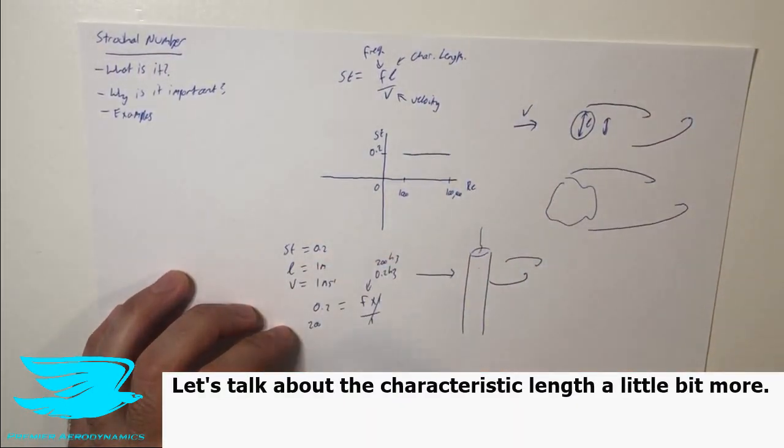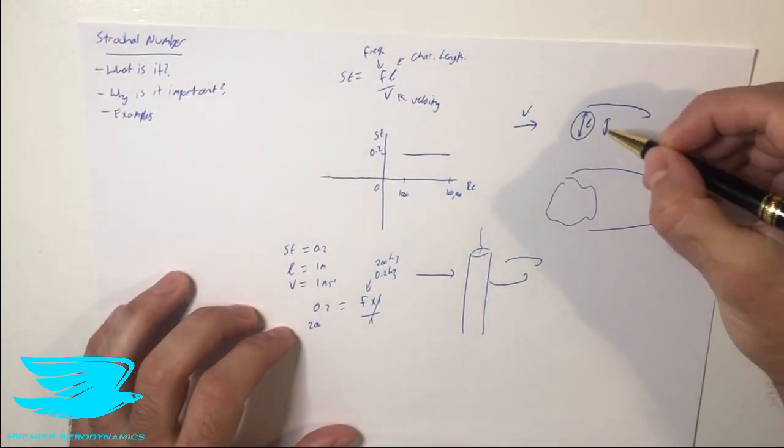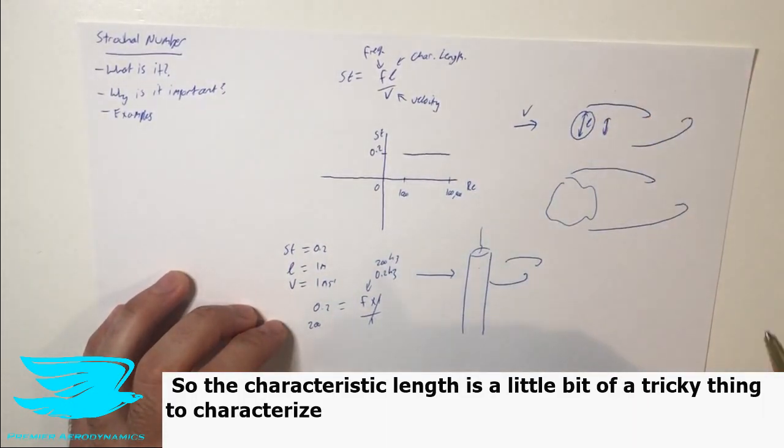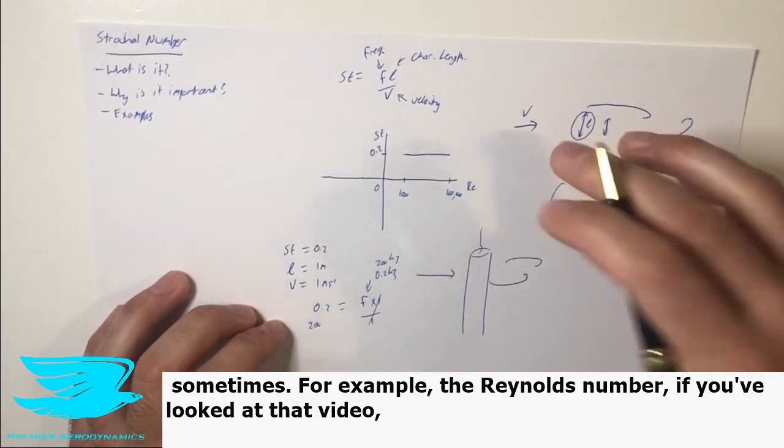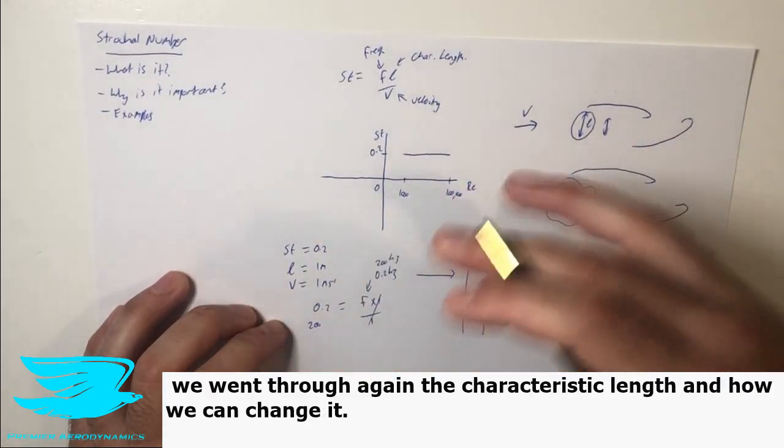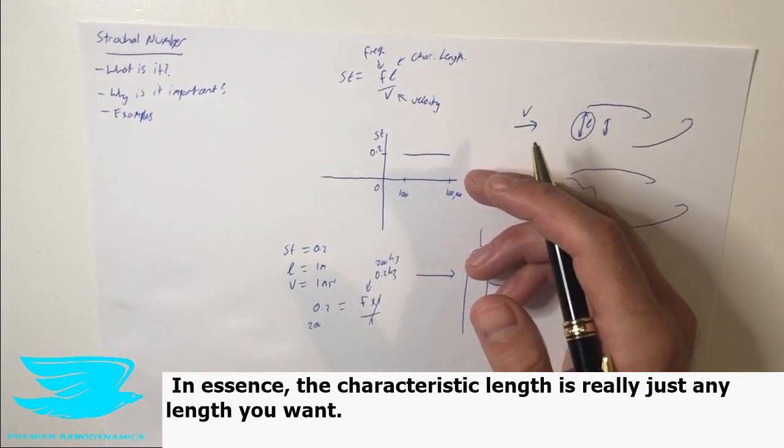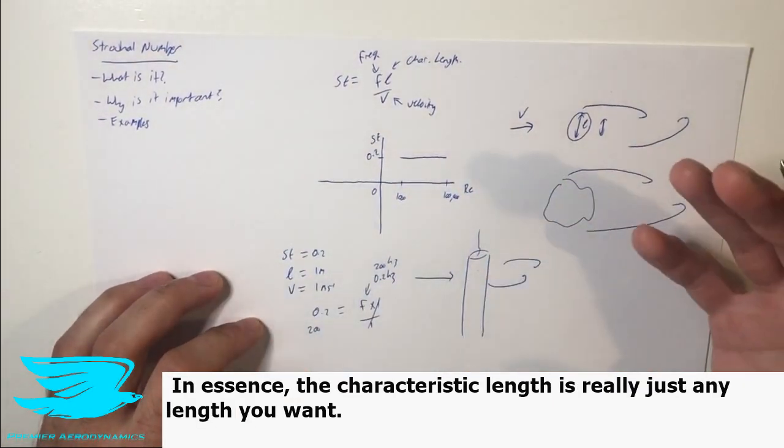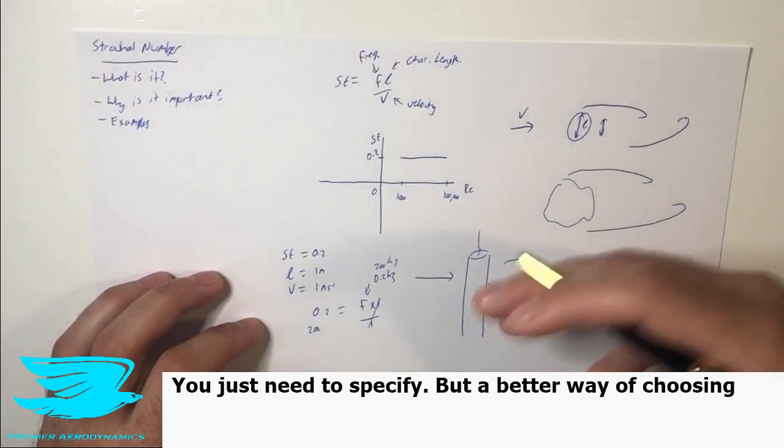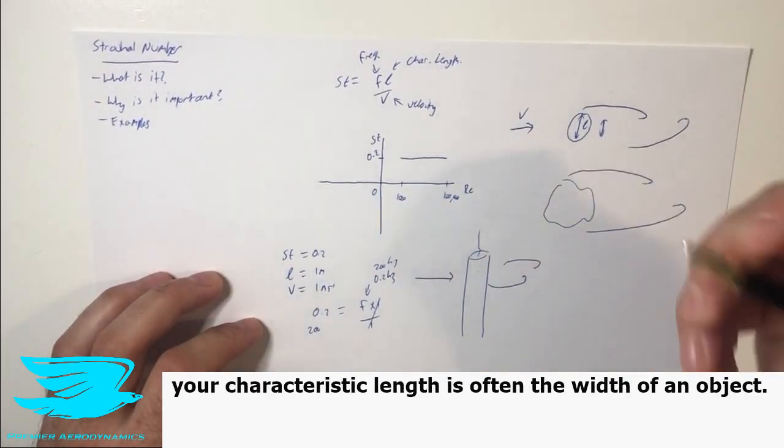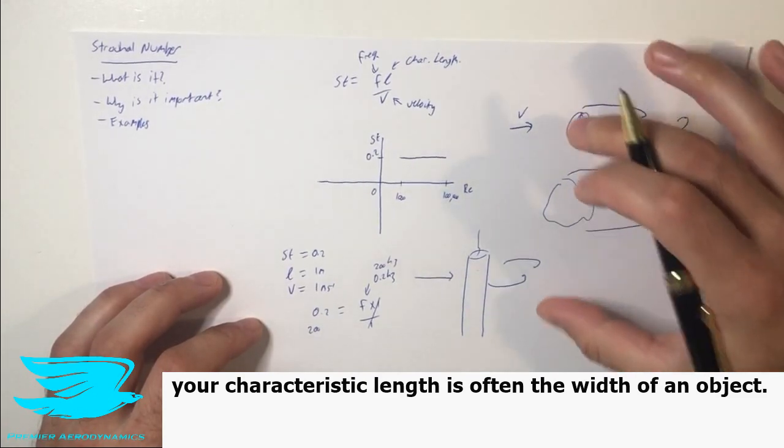Let's talk about the characteristic length a little bit more. So the characteristic length is a little bit of a tricky thing to characterize sometimes. For example, the Reynolds number as well, if you've looked at that video, we went through, again, the characteristic length and how we can change it. In essence, the characteristic length is really just any length you want, you just need to specify. But a better way of choosing your characteristic length is often the width of an object.